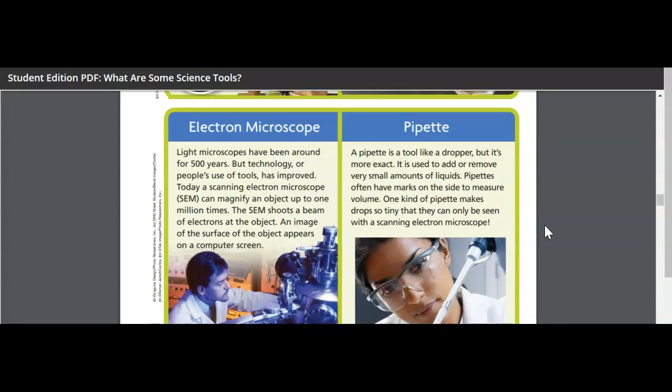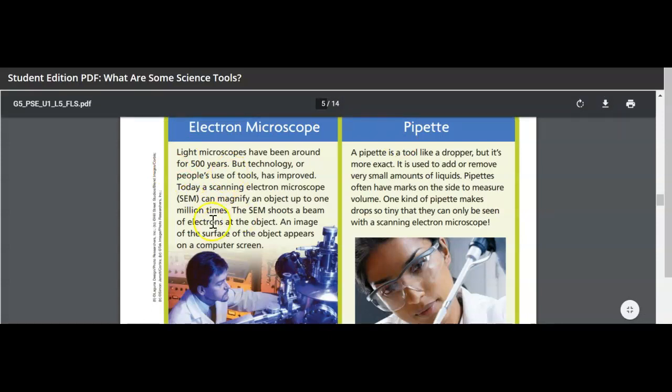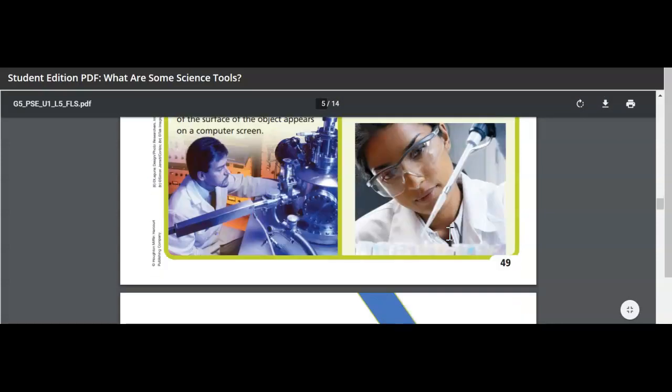So I guess we're going to get to the bottom of what that tool was. It's called a pipette. A pipette is a tool like a dropper, but it's more exact. It is used to add or remove very small amounts of liquid. Pipettes often have marks on the side to measure volume. One kind of pipette makes drops so tiny that they can only be seen with a scanning electron microscope, so an SEM. That's really cool.